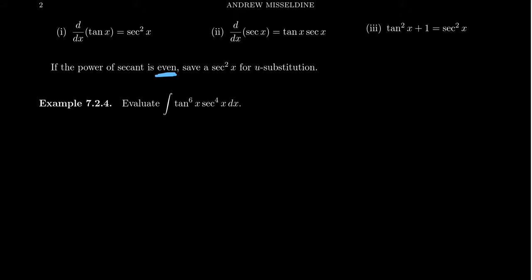If you have an even number of secants, my recommendation is to use this identity right here and set this equal to du. That is, you want du to equal secant squared dx.